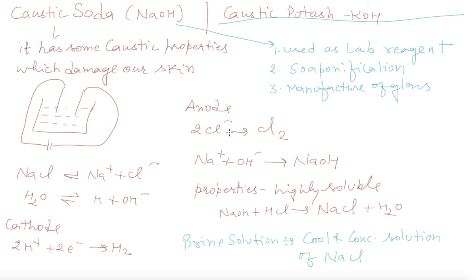At the cathode, 2H+ plus 2 electrons gives hydrogen gas. At the anode, chlorine releases 2 electrons and we get Cl2. What is left is Na and OH, which form NaOH. Caustic soda is highly soluble. It can react with HCl to give NaCl. NaOH can react with H2SO4 to give Na2SO4 and water.